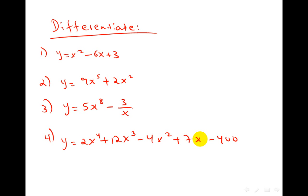5x cubed minus 4x squared plus 7x minus 400.